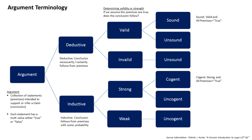An example of modus ponens: If an angle satisfies 90° < A < 180°, then A is an obtuse angle. A equals 120 degrees. Therefore, A is an obtuse angle. Since the measurement of angle A is greater than 90 degrees and less than 180 degrees, we can deduce from the conditional statement that A is an obtuse angle. However, if we are given that A is an obtuse angle, we cannot deduce from the conditional statement that 90° < A < 180°.